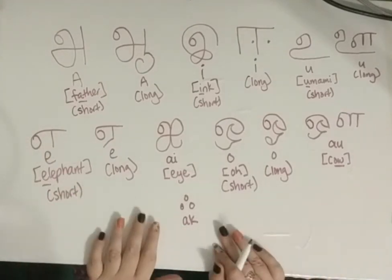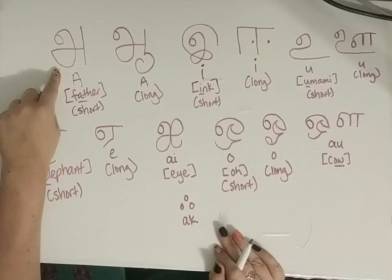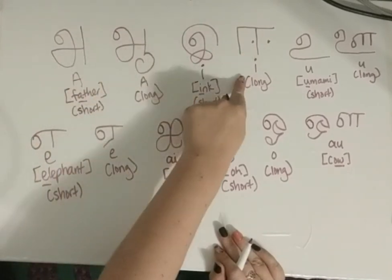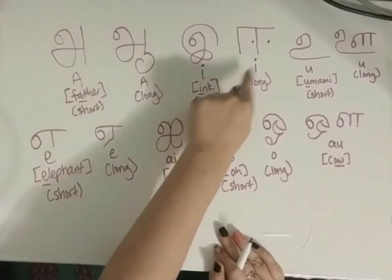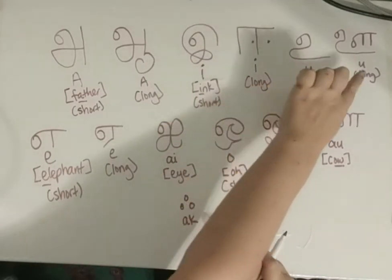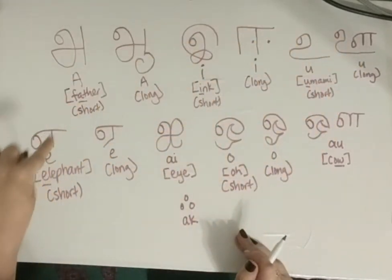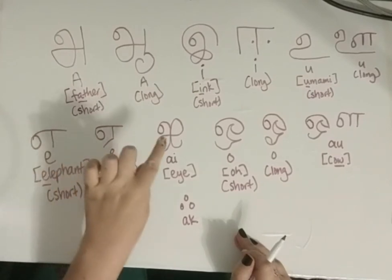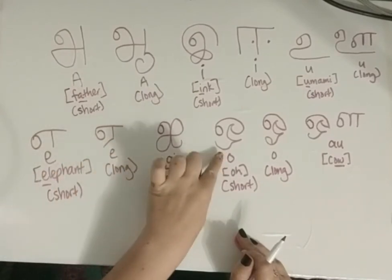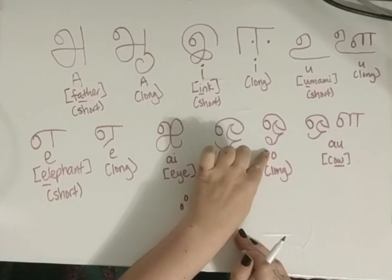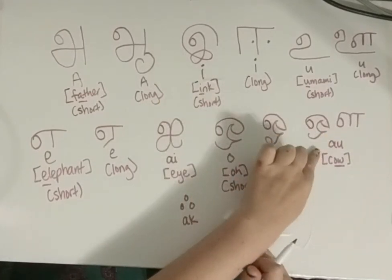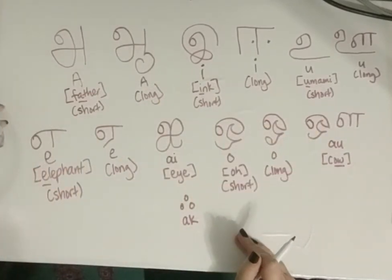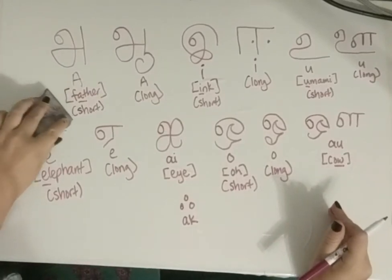Let's run through all the vowels together: A, long A, I, long I, U, long U, E, long E, I, O, long O, and AU — the 'ow' sound.